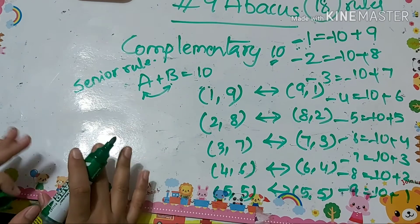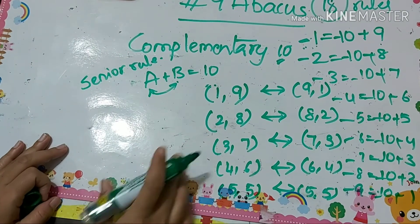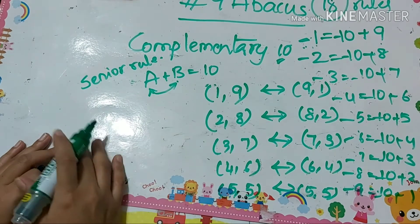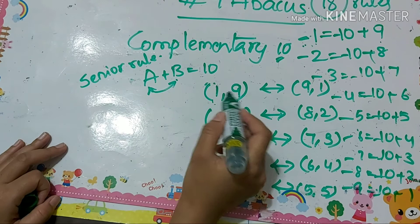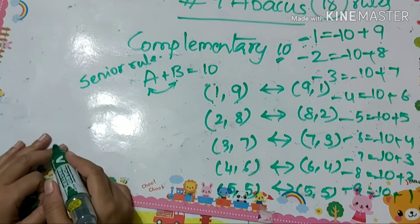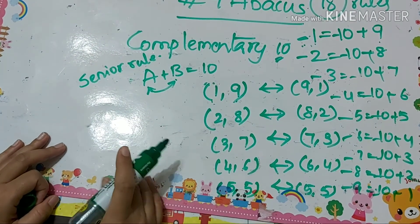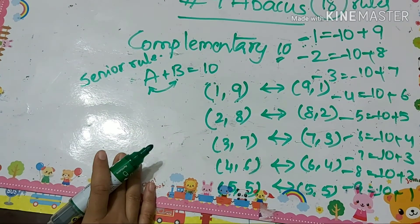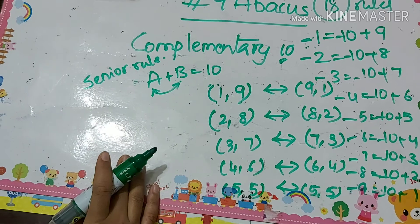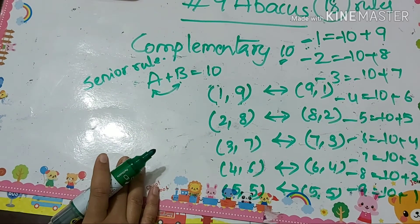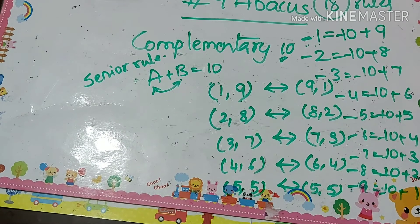These are all 18 formulas used in the senior friend method, also called the complementary-10 method. When solving, we first try the direct method, then the small friend method if direct is not possible, and finally the big friend method. When we don't have sufficient beads, we take the help of the friend to derive the required beads. Let's solve a few problems so you can better understand.